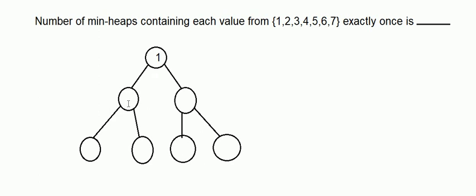The next part is to choose the values at the second level. Suppose 2 is not at this level — then 2 would be somewhere lower. If 2 is at a lower level, the value above it would be either 3, 4, 5, 6, or 7, which denies the min-heap property. So 2 must be somewhere at this second level.